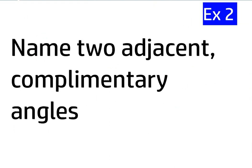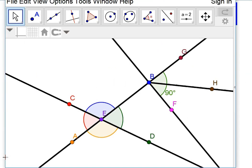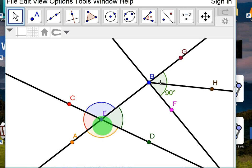Next. Name two adjacent complementary angles. So, adjacent means they're next to each other and complementary means they add up to 90 degrees. Pulling this back up, I see a 90 degree angle. It's this angle right here. So, two angles that are next to each other and form 90 would be GBH and FBH. They are right next to each other and they form 90 degrees. GBH and FBH.